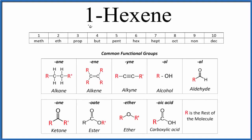Let's write the structural formula for 1-hexene. The molecular formula, that's C5H12, but that doesn't tell us how the atoms are organized. For that, we need the structural formula for 1-hexene.